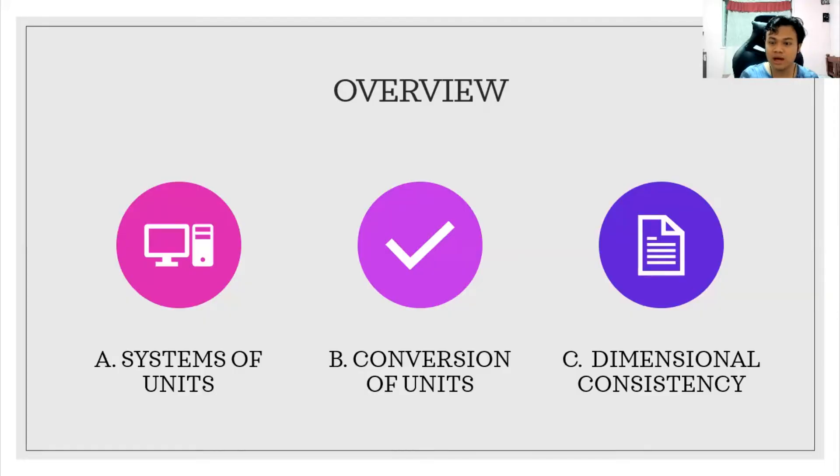What I'm sharing to you right now is a bit simpler side of the chemical engineering calculations. There are three parts of this lesson, which is the systems of units, which I will be introducing to you, and then the conversion of units, especially from SI to English to American engineering units, and then dimensional consistency.